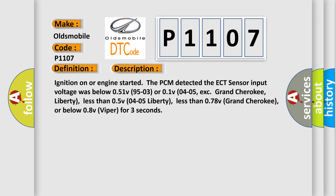Ignition on or engine start at the PCM detected the ECT sensor input voltage was below 0.51V, 95-03, or 0.1V, 04-05 except Grand Cherokee, Liberty; less than 0.5V, 04-05 Liberty; less than 0.78V Grand Cherokee; or below 0.8V Viper for three seconds.